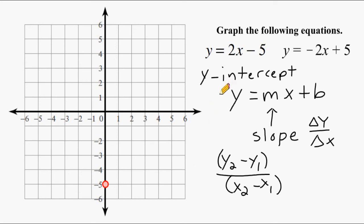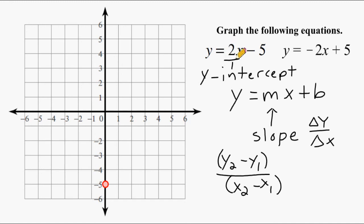After that, we go to the number in front of x, which is our slope. Now remember, slope is a rate of change — the change in y over the change in x. But we only have one number, and whenever you have one number, you should write a 1 on the bottom so you can show a rate of one thing compared to another. In this case, that's the rate of change of y over x. So for every two units that the y changes, the x is going to change one unit.